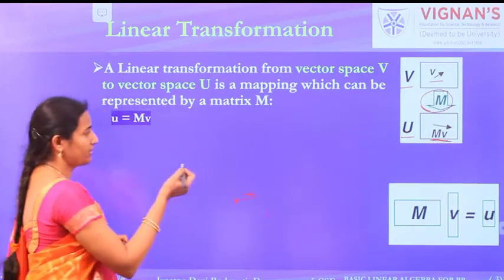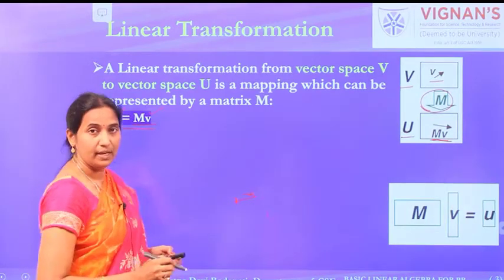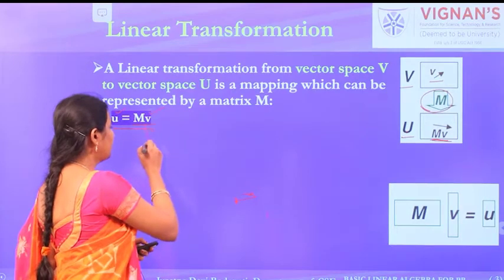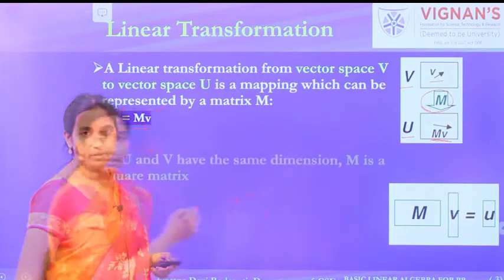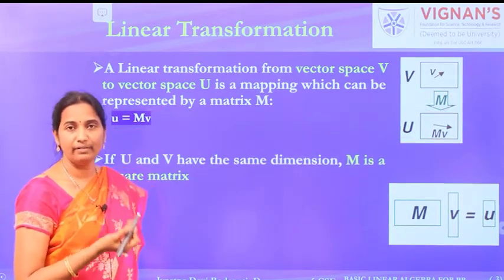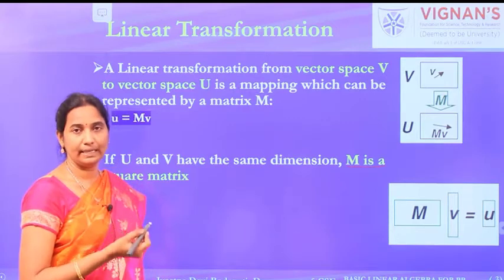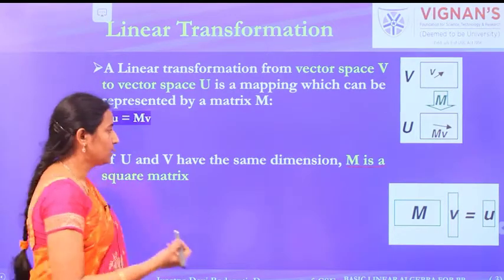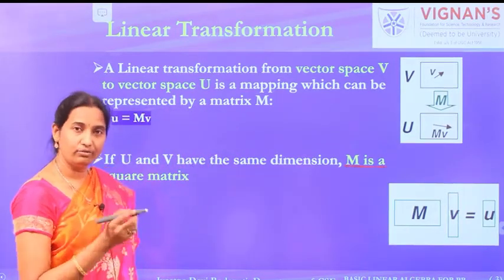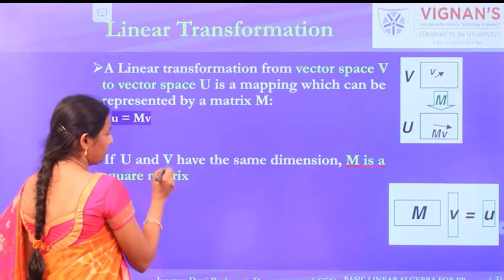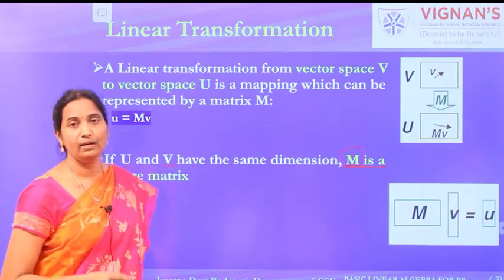The transformation operation is U = MV, where M is the transformation matrix and the operation is a linear transformation. Depending on the dimensions of vectors U and V, the dimensionality of matrix M is decided. If U and V are of the same dimension, M can be a square matrix. If they are of different dimensions, the matrix used must be of rectangular type.